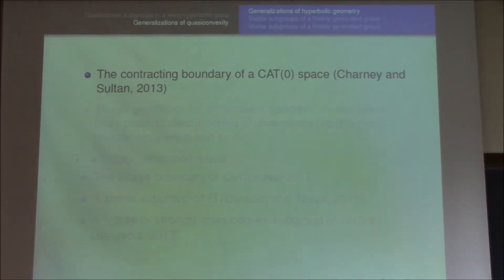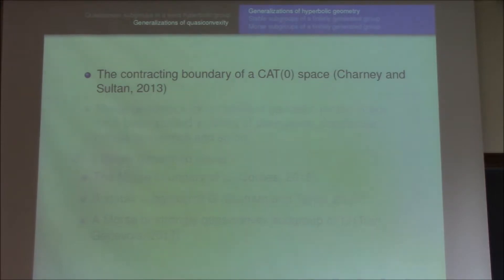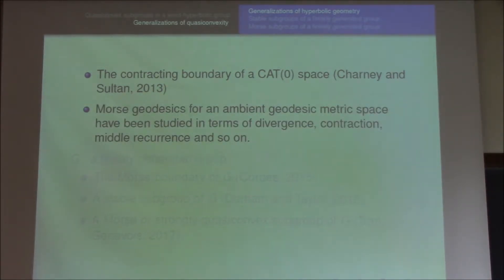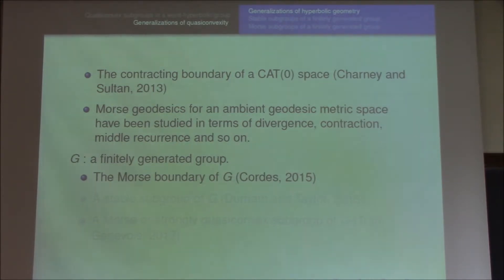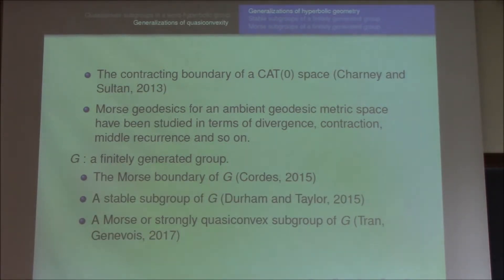From this perspective, Charney and Sultan defined the contracting boundary of a CAT(0) space by looking at Morse geodesics in a CAT(0) space and considering limit points. Morse geodesics for an ambient geodesic metric space have been studied in terms of divergence, contraction, and sublinear recurrence. In 2015, Cordes defined Morse boundaries for finitely generated groups, similarly focusing on Morse geodesic rays and their limit points. We have two generalizations of quasi-convexity: stable subgroups and Morse subgroups.